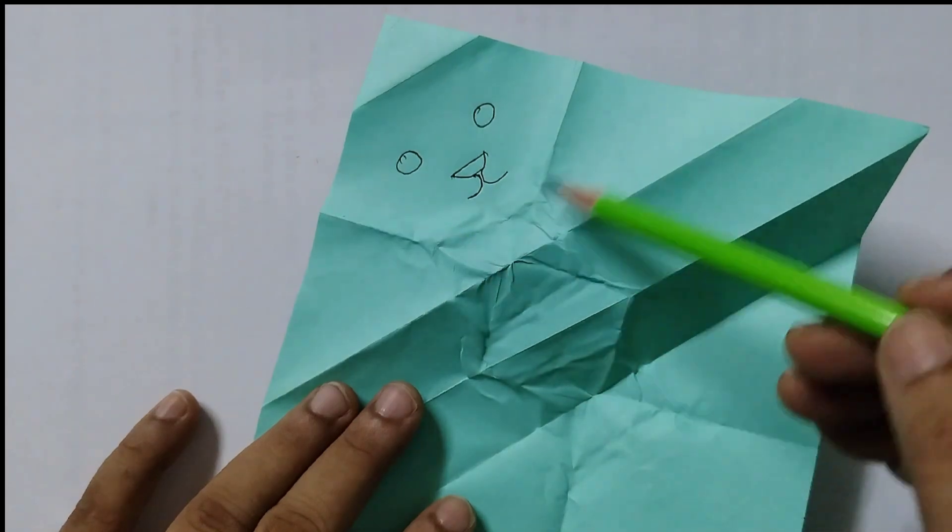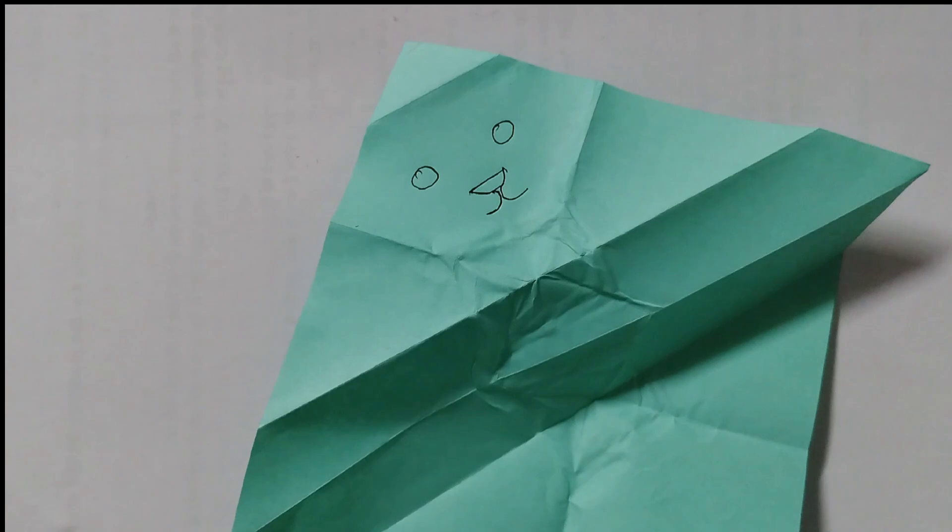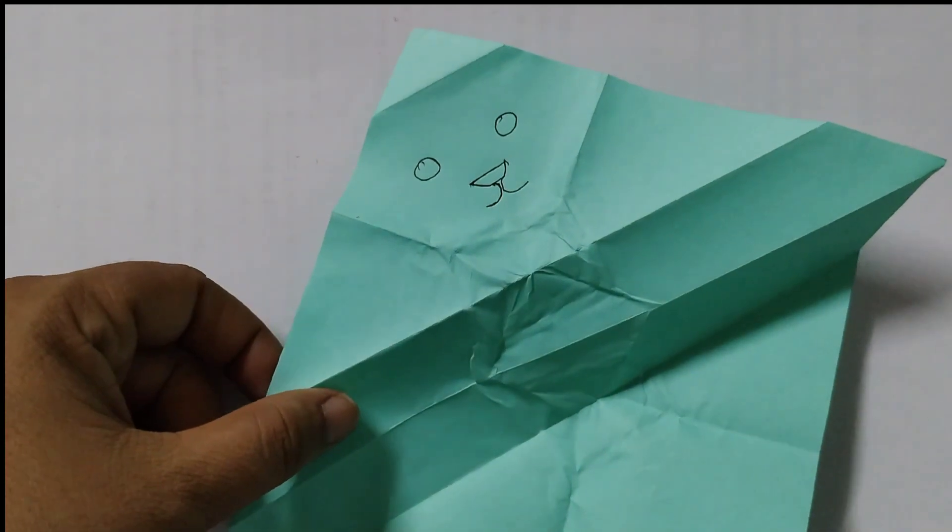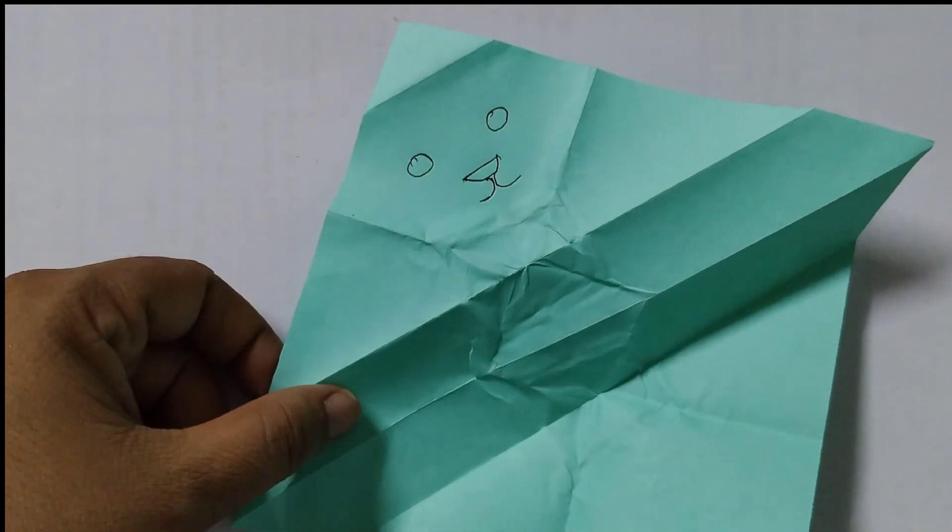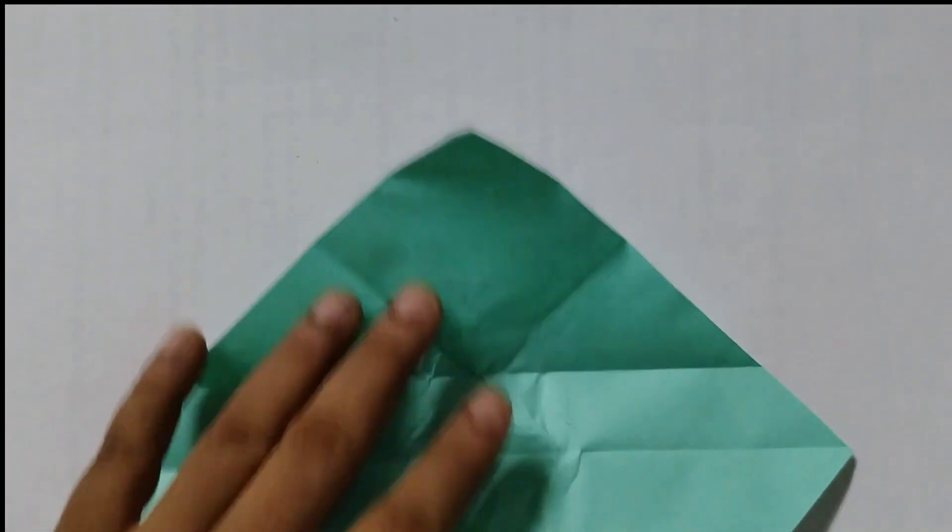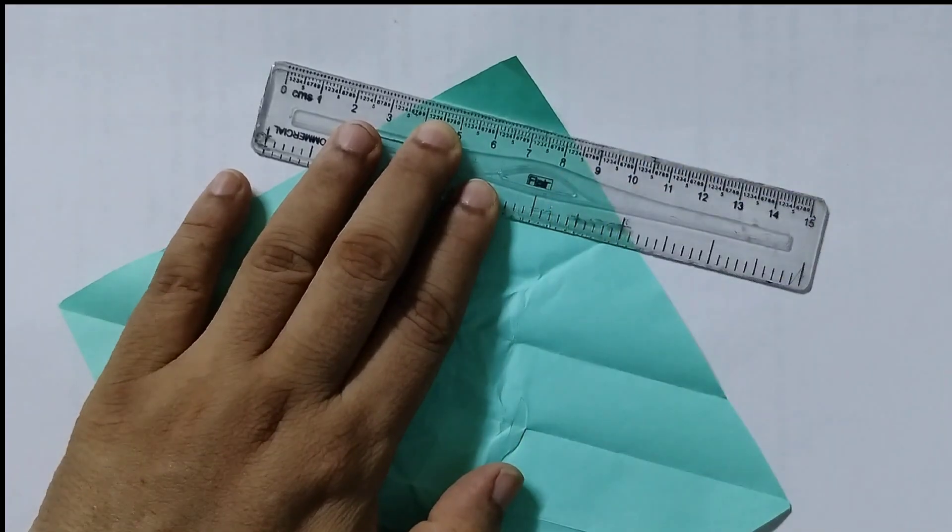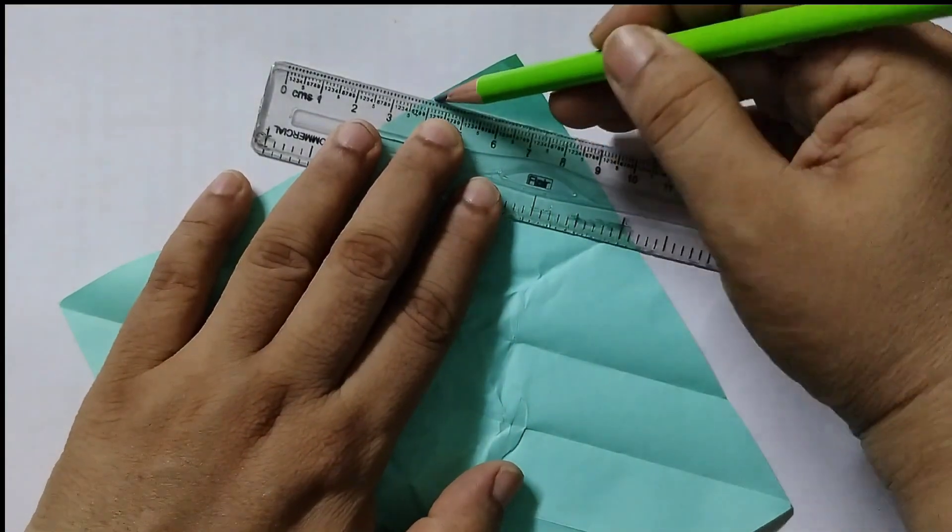These are called the creases. These lines formed are the creases. These are the creases. Now we need to draw lines on the creases and measure the angles formed. You can take a ruler like this. Draw the lines.